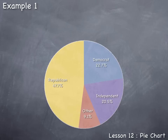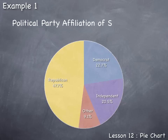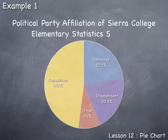The pie chart isn't complete until it has its title. The title needs to describe the data along with the population from which the data was sampled. In this case an appropriate title would be: Political Party Affiliation of Sierra College Elementary Statistics Students.